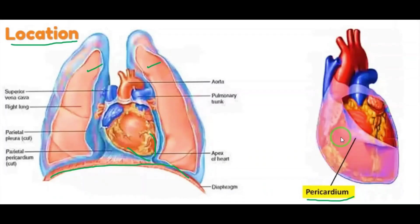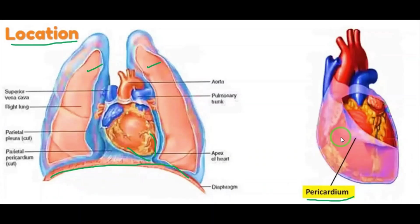Another function of pericardial fluid is that it protects the heart from mechanical injuries. For example, if we accidentally dash against a wall or someone hits our chest, this fluid absorbs the shock and protects the heart. So these are the two functions: reducing friction during heartbeat and protecting the heart from mechanical injuries.